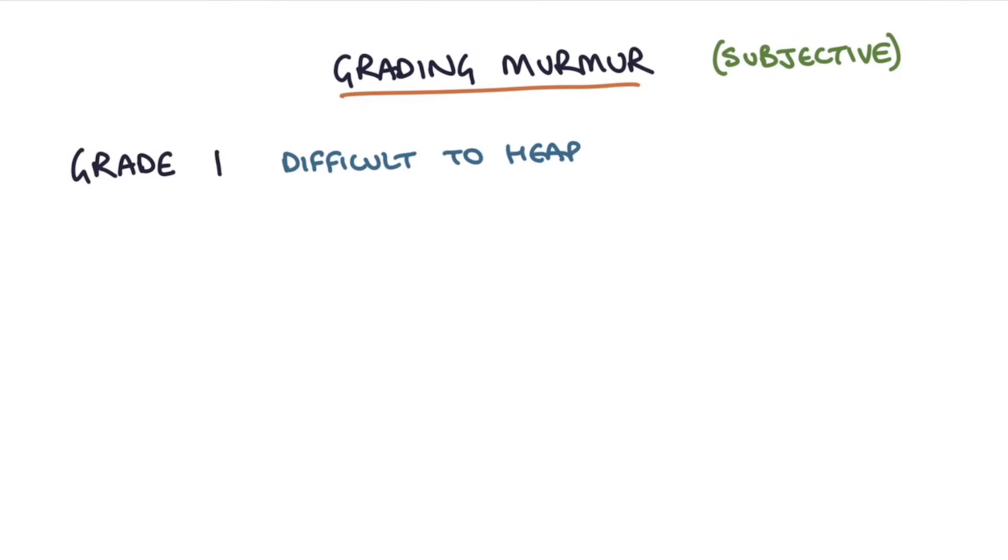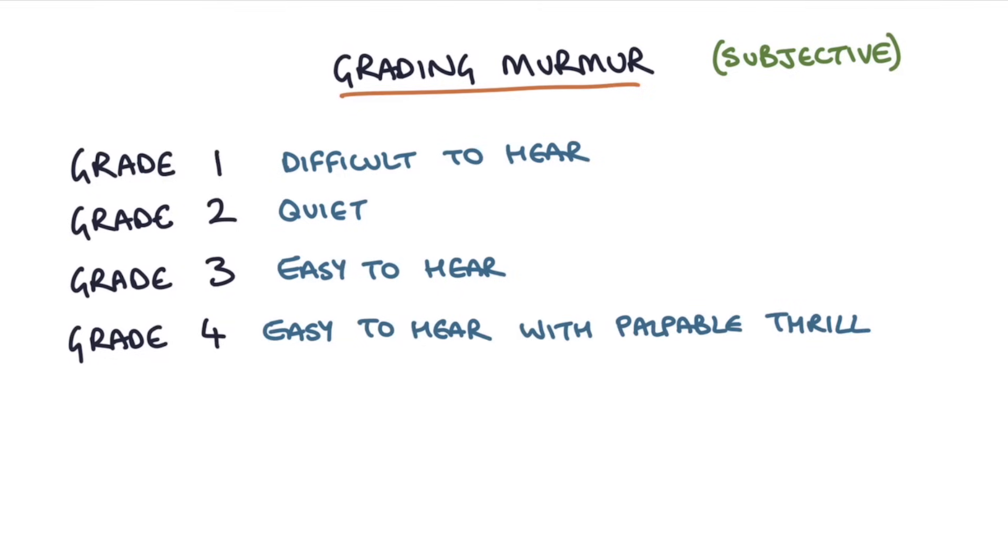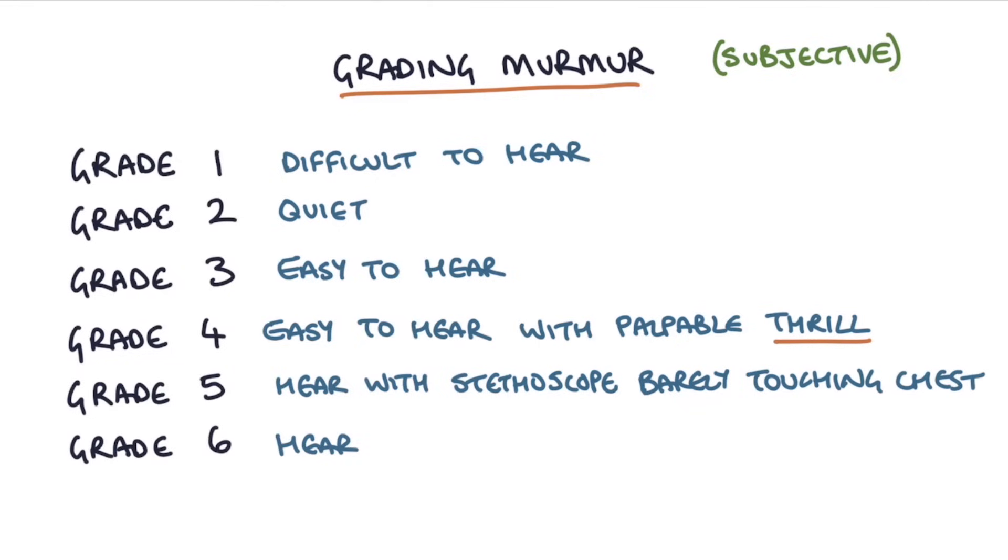Let's talk about the grade of murmurs. Grading a murmur is quite subjective, but it can be helpful in assessing the severity of the defect, and it will also make you sound clever when you grade a murmur in your OSCEs. If in doubt, it's probably grade two or three. Grade one is difficult to hear. Grade two is quiet. Grade three is easy to hear. Grade four is easy to hear and with a palpable thrill. So when you put your hand on the chest, you can feel the murmur. Grade five is when you can hear the murmur with your stethoscope barely touching their chest. And grade six is when you can hear the murmur with your stethoscope actually off the chest, just holding it nearby.